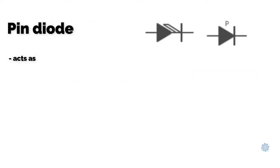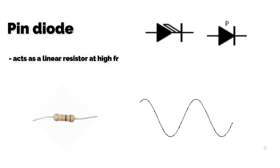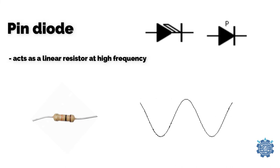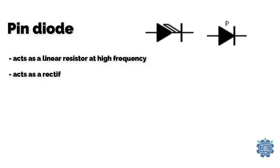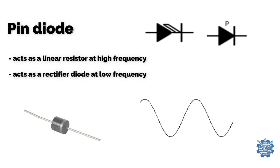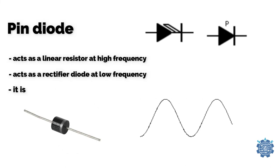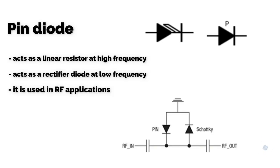PIN diode acts as a linear resistor at high frequencies and as a rectifier diode at low frequencies. It is used in RF applications.